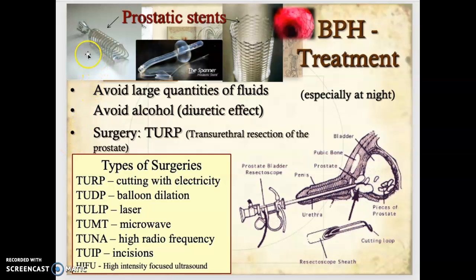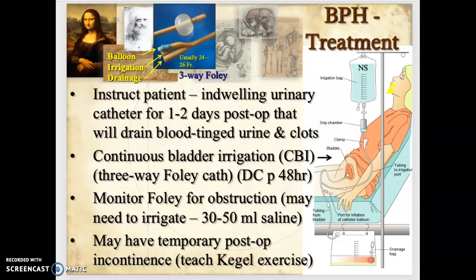A newer treatment option is prosthetic urethral stents, placed inside the urethra to push the urethral walls outward and allow urine to flow freely.